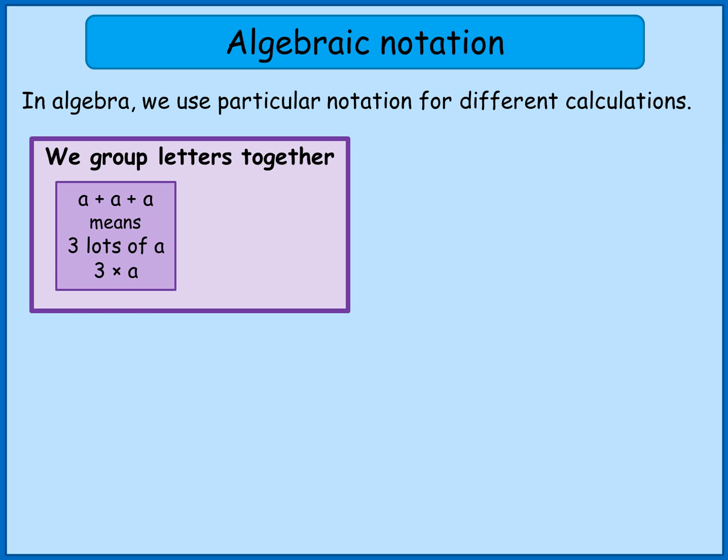We don't tend to just leave it as three times a, but we'll get onto that in a minute. If I had b plus b, that actually means I've got two lots of b. Lots of means times, so I could write that as two times b instead.